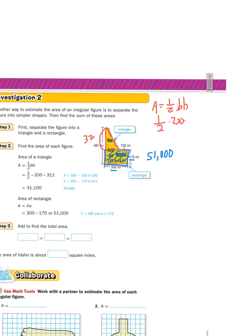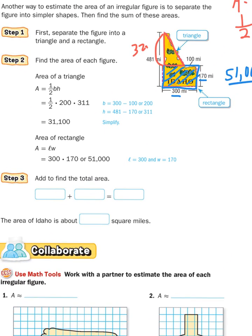That gives us: half times 200 times 321, which equals 32,100 square miles for the triangle. The rectangle is 51,000 square miles. Adding them together in step three: 51,000 plus 31,100 equals about 82,100 square miles. That's the approximate area of Idaho.